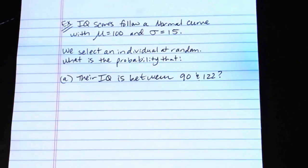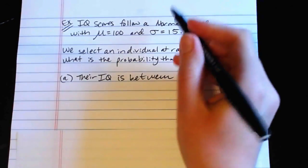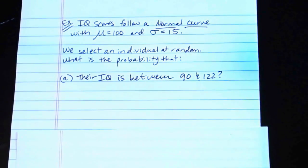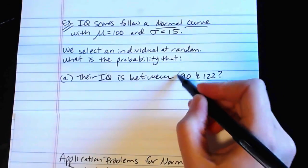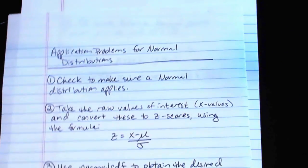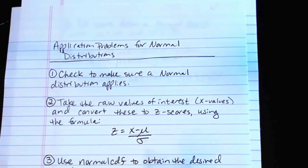Okay, so if we're going to follow that process I just talked about, first check your scenario to make sure that a normal distribution applies. Well, it says right here IQ scores follow a normal curve, so we can be sure that a normal distribution applies. Then we want to take the raw values of interest, that's these guys, the x values, and convert them to z scores using the formula x minus mu over sigma.